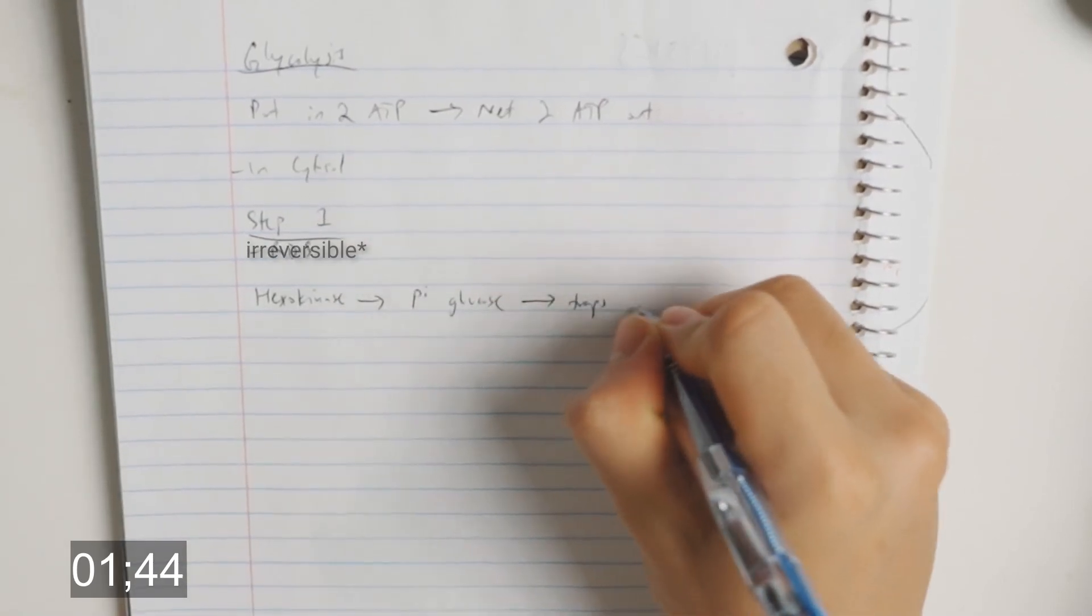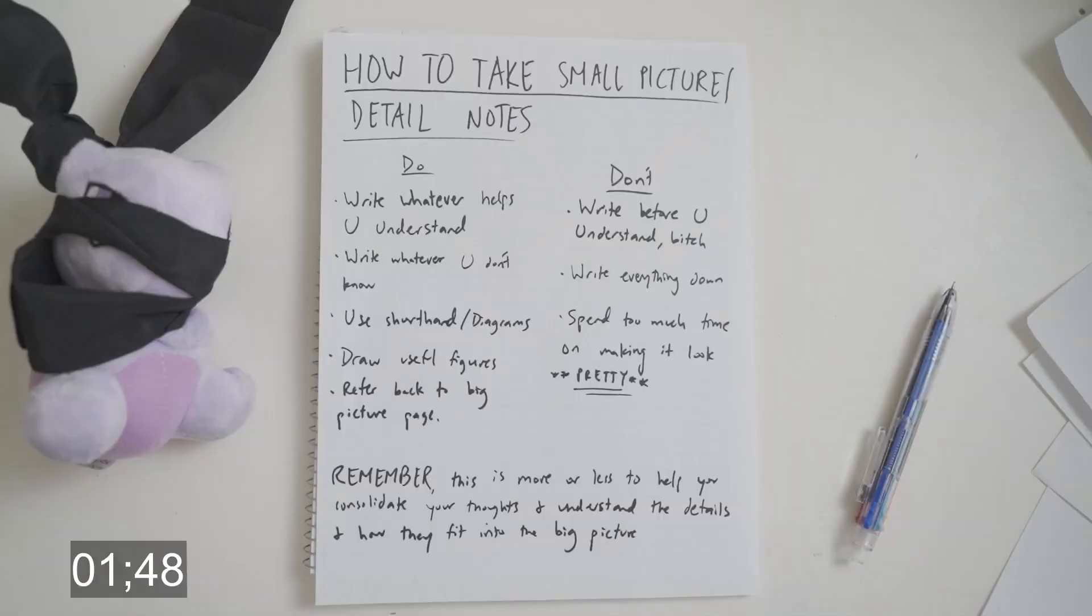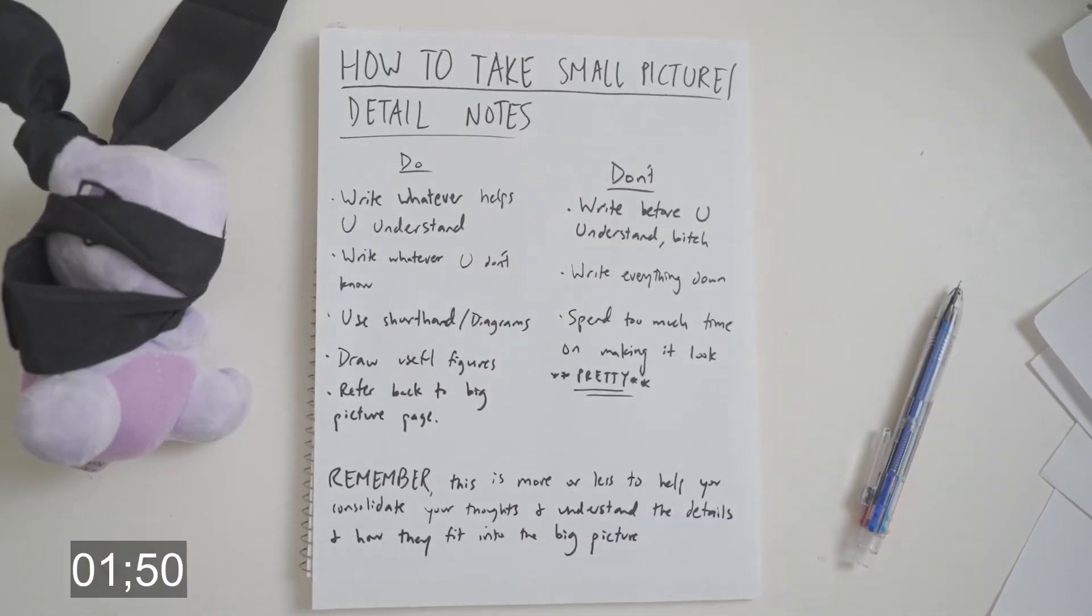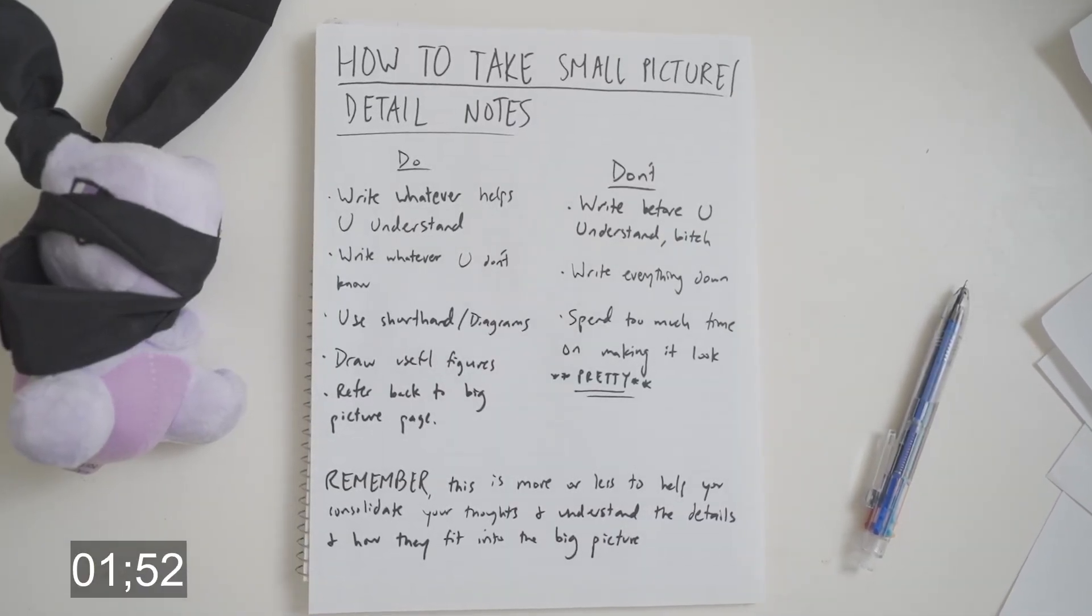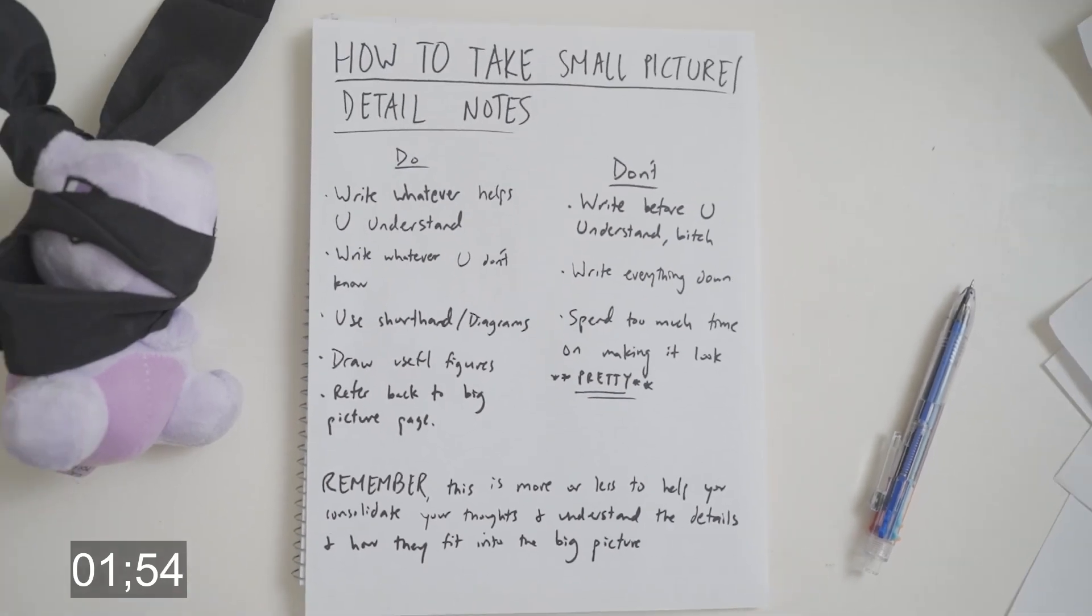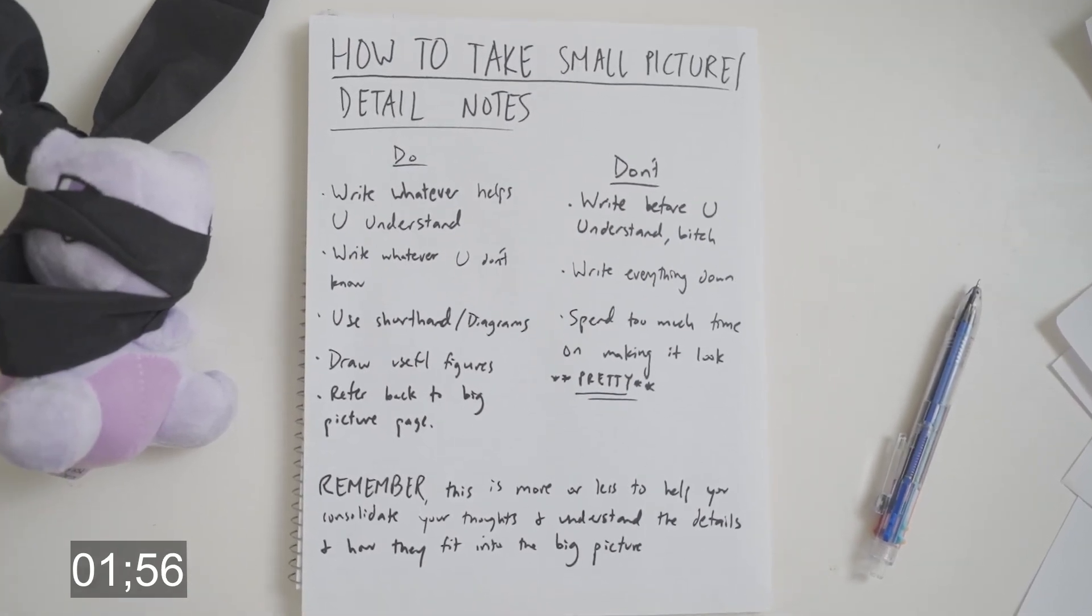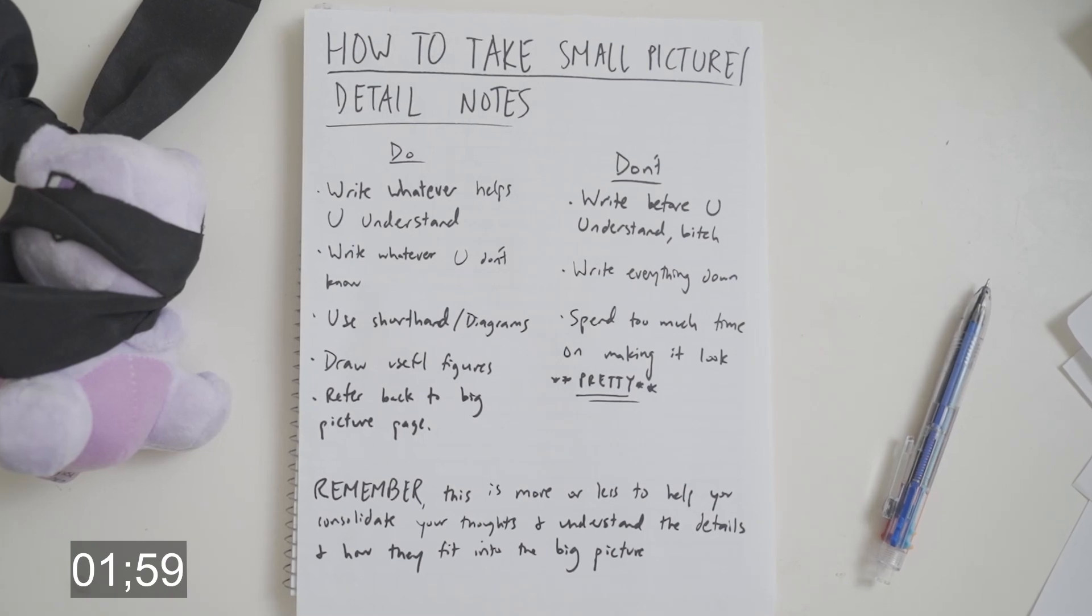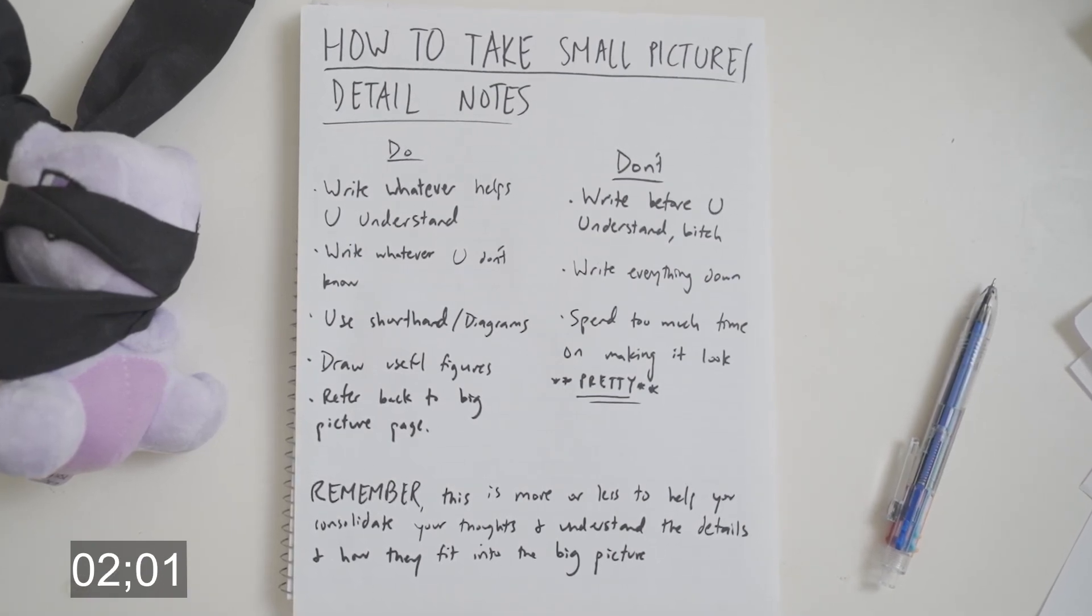Hexokinase, P arrow glucose, traps against brackets gradient. You can do shorthand, diagram it out, and this will speed things up a lot. The purpose of this is to consolidate what you're learning and make sense of the material as you learn it. It's not to leave that stuff for later. Don't write down things that seem too obvious or details you'll probably never use. Just keep it simple.